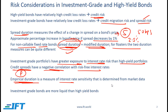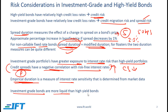The empirical duration for high yield bonds tends to be much lower than the empirical duration for investment grade bonds, and the major reason is that credit spreads have a negative correlation with interest rates. So if overall interest rates go up, the credit spreads tend to come down.